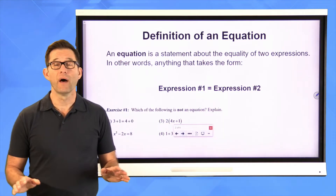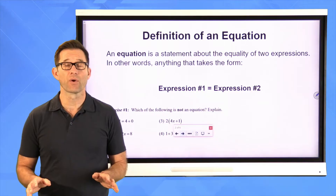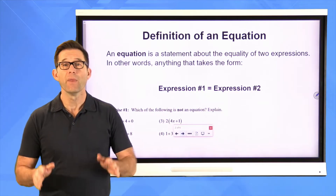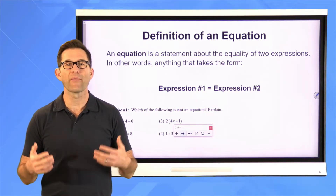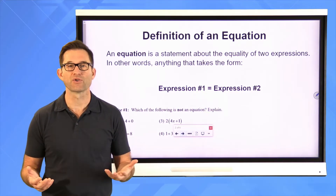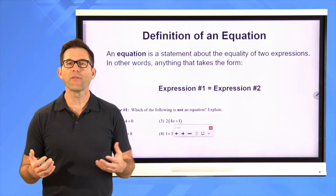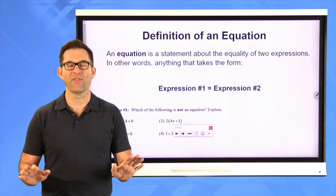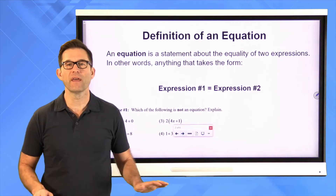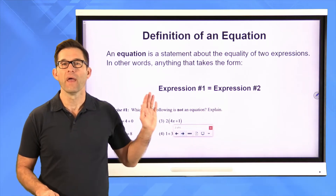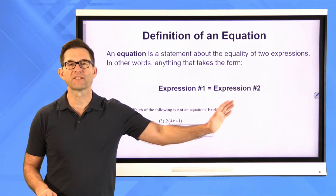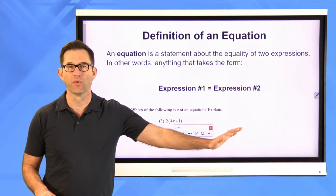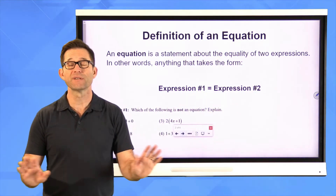It's really simple enough. The definition of an equation: an equation is a statement about the equality of two expressions. In other words, it's anything that takes the form expression number one equals expression number two. It's just a statement.